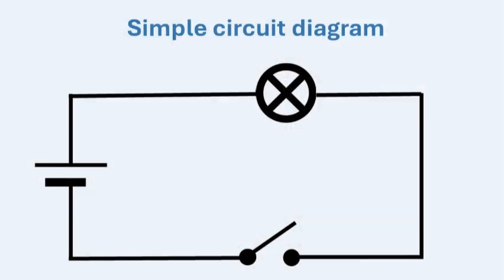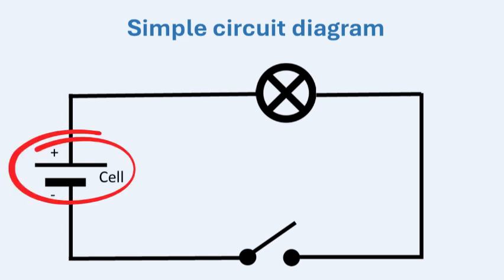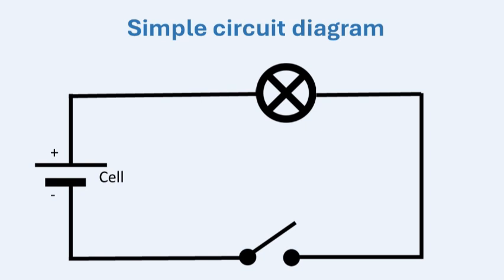Here is a simple circuit diagram. Do you see the cell? What about the light bulb? Can you see the conducting wires and switch? Take a moment to think about this. Let's take a look at the simple circuit diagram together. The cell is the power source of the circuit. In the diagram, you'll see it represented by two lines — one longer and one shorter. The cell provides the energy that makes everything work. The light bulb is what lights up when the circuit is complete. In the diagram, it will look like a circle with a cross — that's the symbol for the light bulb.